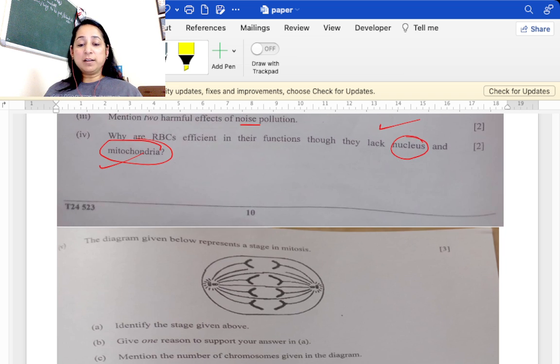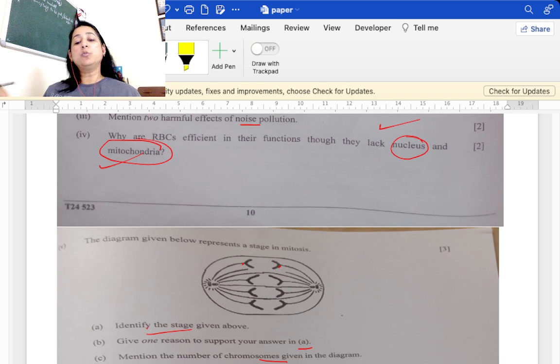The diagram given here, identify the stage: it is anaphase. Give one reason to support the answer: the reason is that the chromosomes have separated and have formed chromatids and are moving apart. That's what's seen. Mention the number of chromosomes given in the diagram. You could count it, these are four, not eight, because these are different. So four chromosomes are there in the diagram.